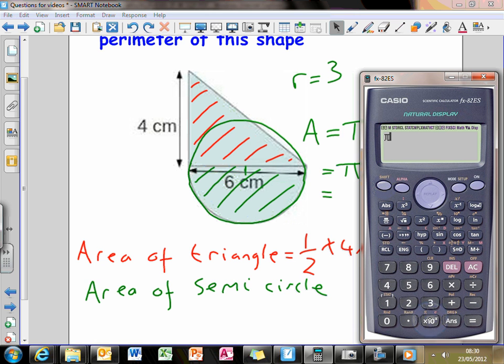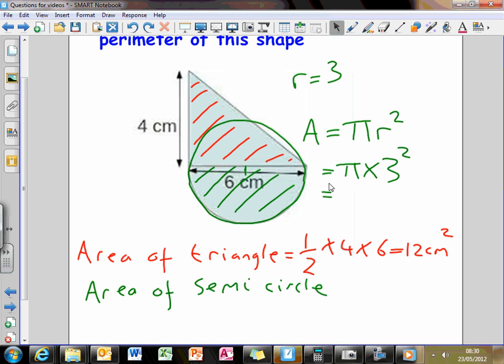pi times 3 squared. We get 28.27 dot dot dot. Okay, that gives us the area of the full circle.